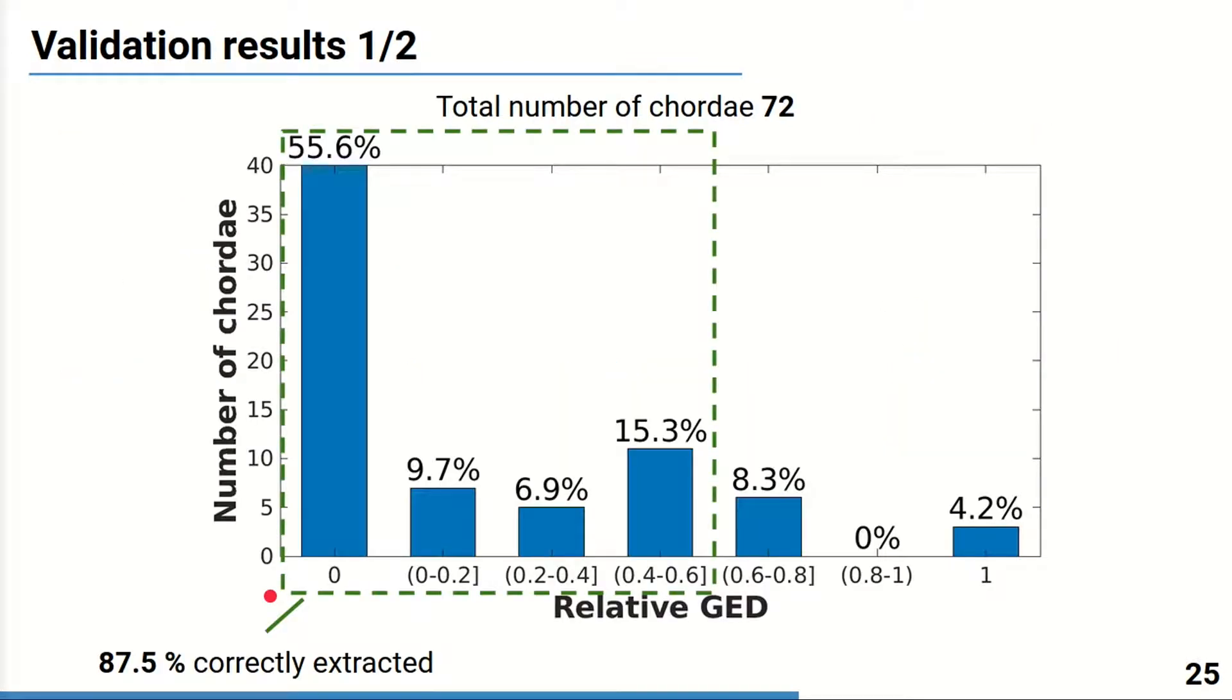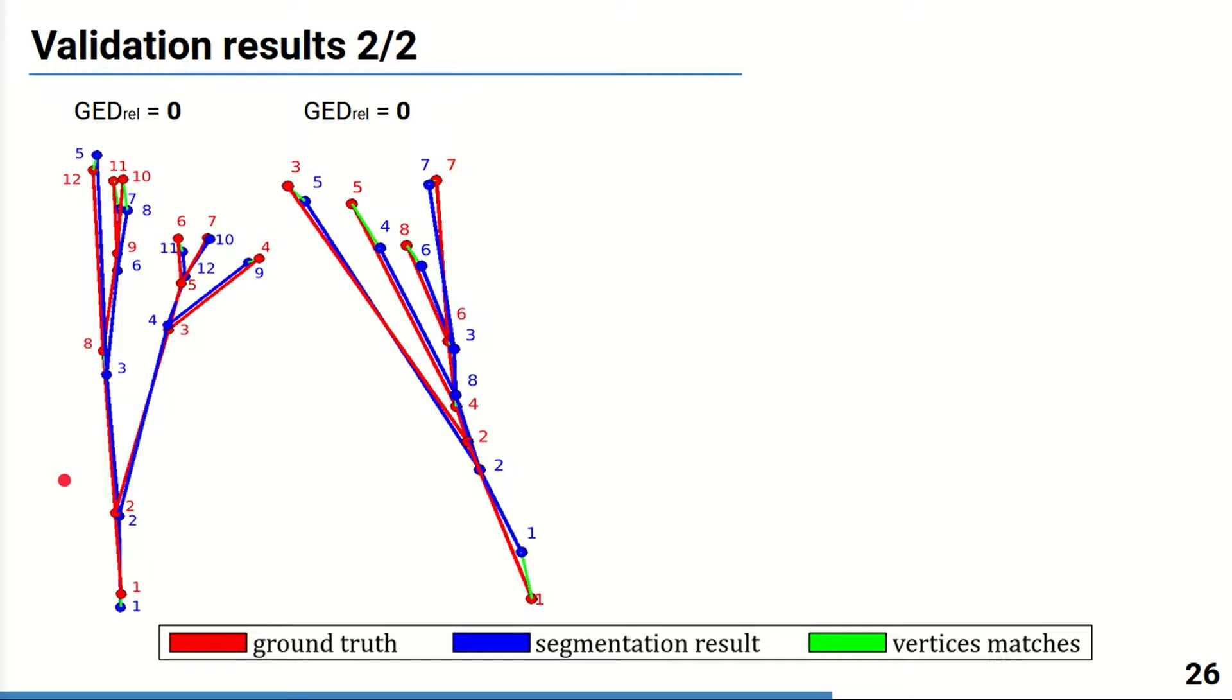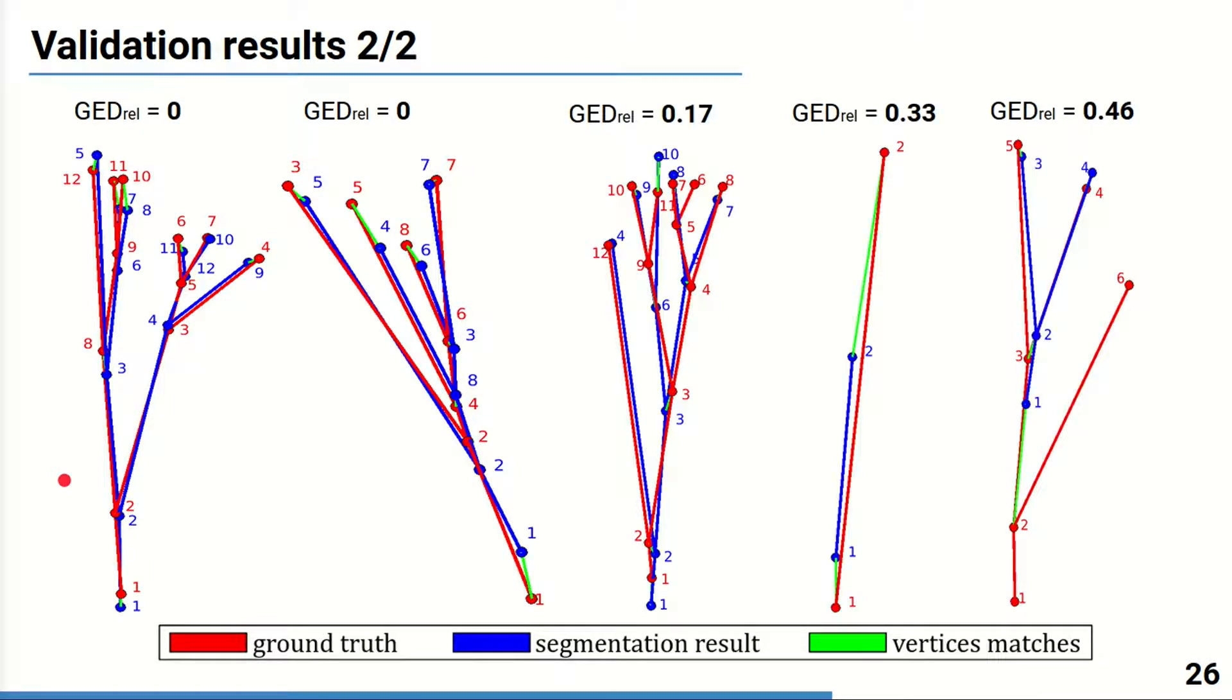A total set of 72 chordae was examined. 87.5% of tested chordae were correctly extracted, which corresponds to the values of GED less than 0.6. And for 40 chordae the actual match was found. Here there are two examples of such chordae. Higher values of the GED correspond to some inaccuracies, such as shown here on the slide.